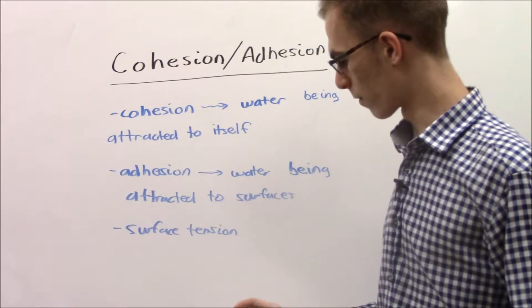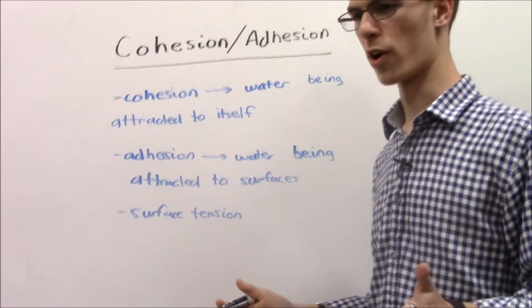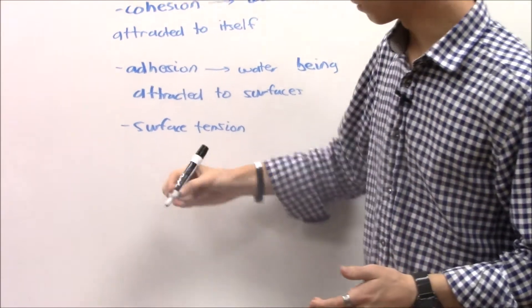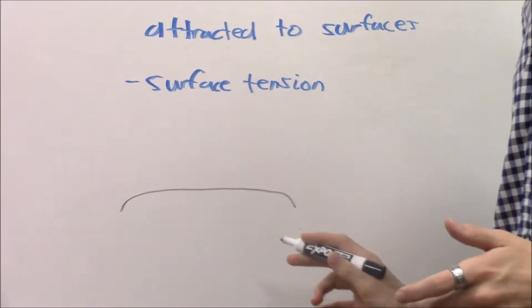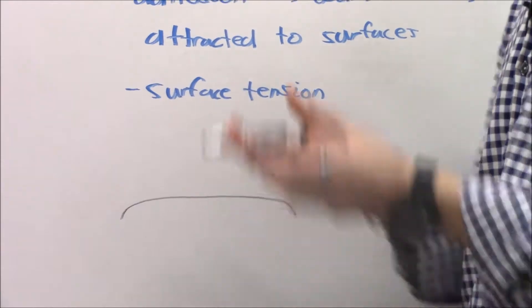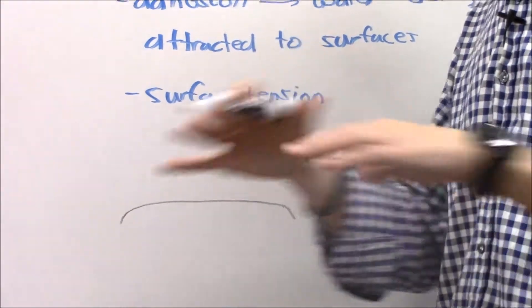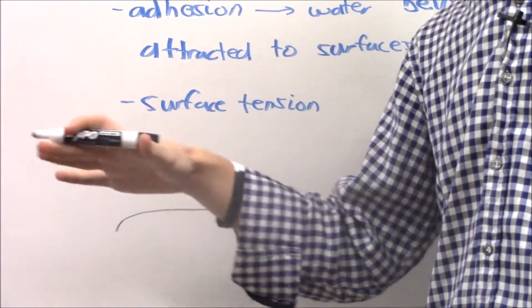Cohesion—if you've ever seen a puddle of water outside or on a table, you know that it kind of curves up at the edges. This is because the water would rather stick to itself than spread out evenly across the entire surface.